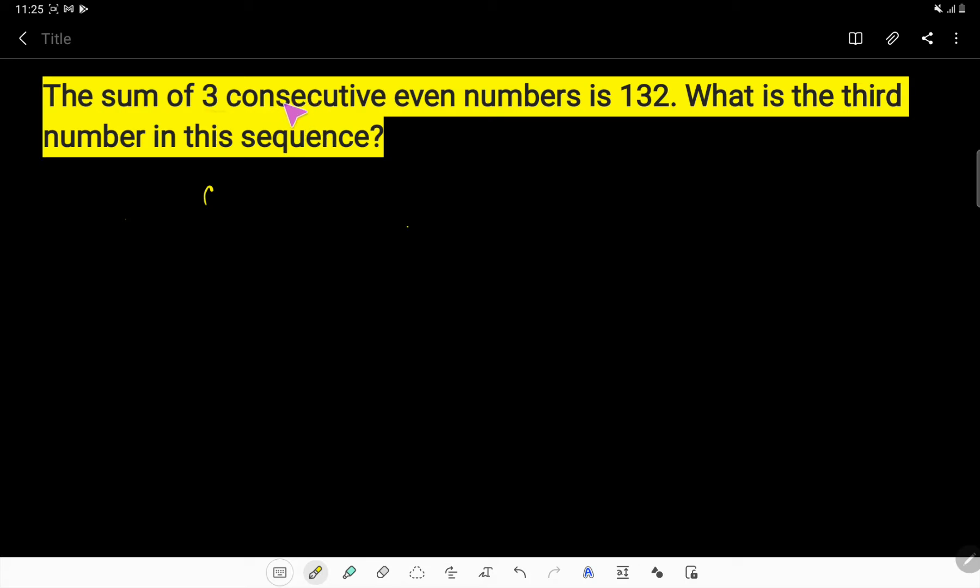Here consecutive means follow one after another. Look, one, then two, then three, then four, five, six, seven. After one, we'll get two. Then after two, we'll get three. So these are consecutive numbers.